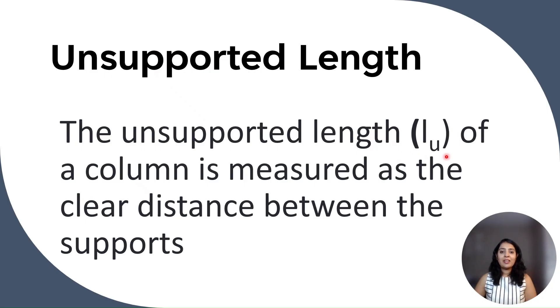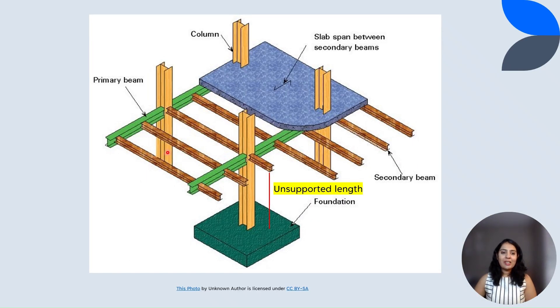Unsupported length is the length of the column measured as the clear distance between the supports. Let's see in the image. So here you can see these secondary beams are being supported on the primary beams, and primary beams are supported on the columns, and column is supported through this foundation. So between these two supports, from bottom of the beam to top of the foundation, this length is called unsupported length. It is the clear distance where the column is not supported.